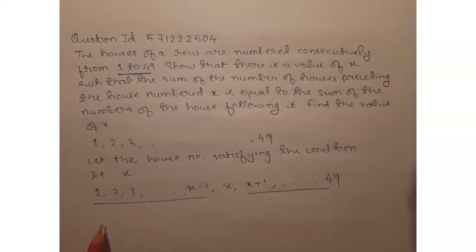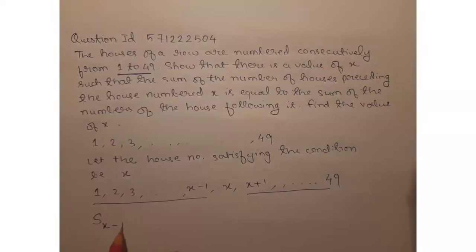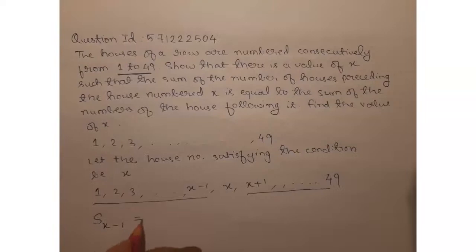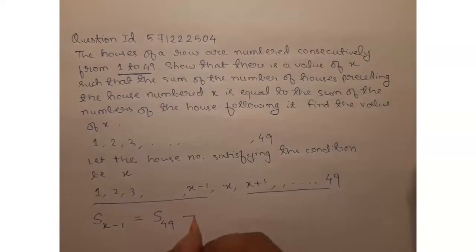So we will have the condition sum of—and we can obviously see that this is an AP with the first term 1 and the common difference of 1. So we have this condition which is sum of the first x minus 1 terms, that is sum of all the terms preceding x, is equal to sum of all the numbers following x.